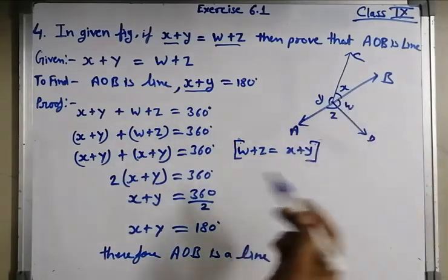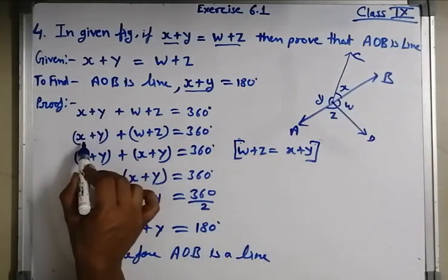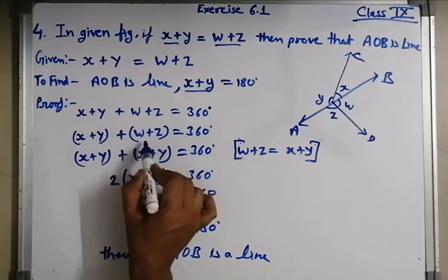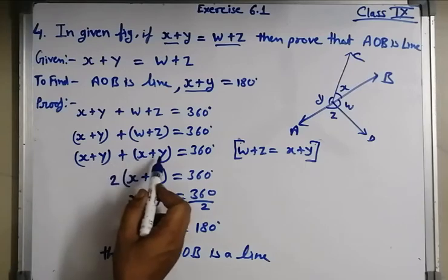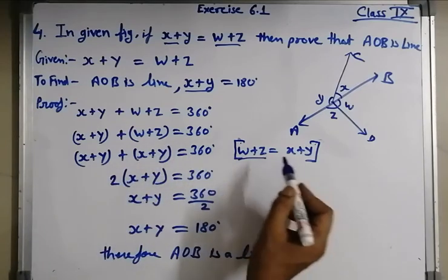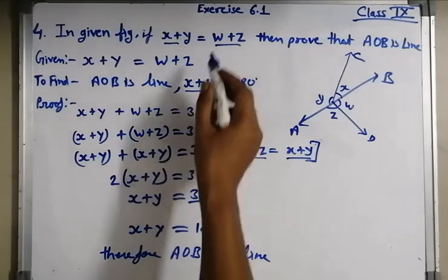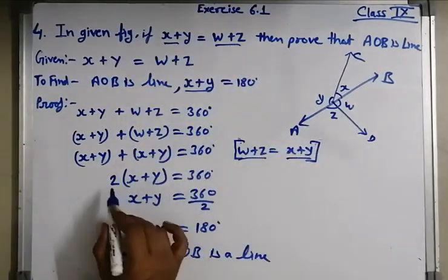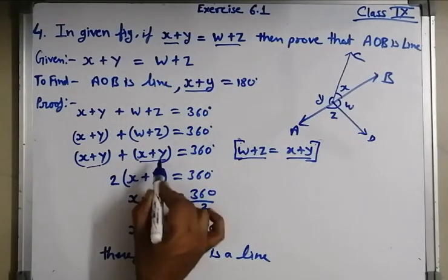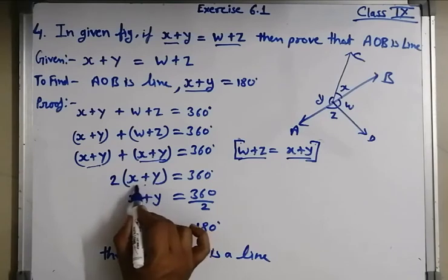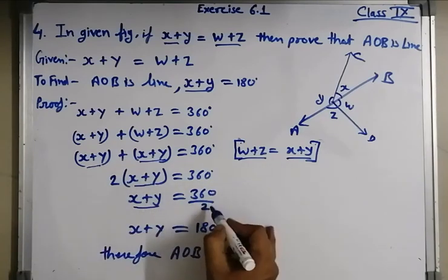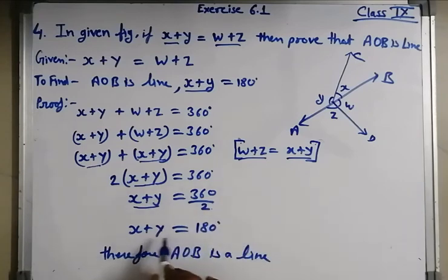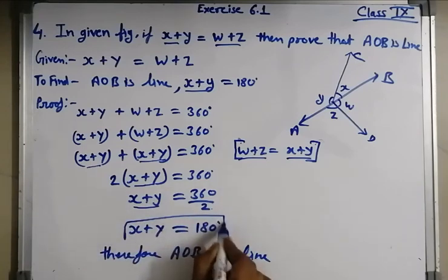Sum of all angles is 360 degrees. So x plus y plus w plus z — replacing w plus z with x plus y since it is given in the question — gives 2 times (x plus y) is equal to 360. So x plus y is equal to 360 upon 2, which means x plus y is equal to 180. It means AOB is a line.